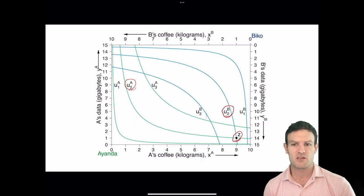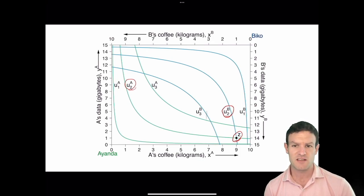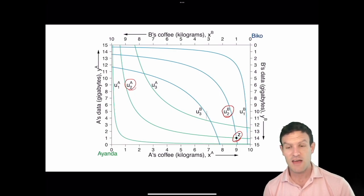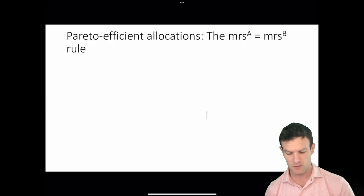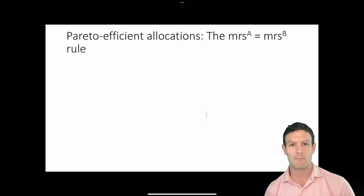We can look at the Edgeworth box and see that there are going to be many different allocations that could be Pareto superior to point Z, so we're going to have to think about how to find those.